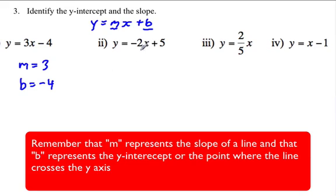For the next question, our m is equal to negative 2 and our b is equal to 5. So that means our slope is equal to negative 2 and our y-intercept is positive 5. The point where it's going to cross the y-axis is at 5.